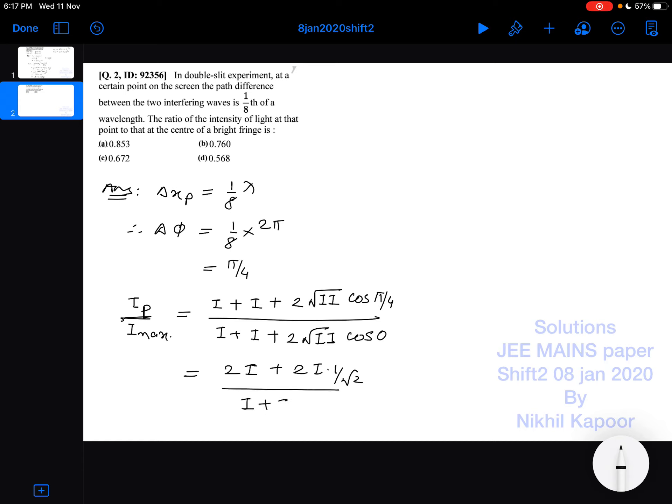by i plus i will be 2i. 2i cos 0 is 1. So the resultant intensity at that point to the resultant intensity at the central point